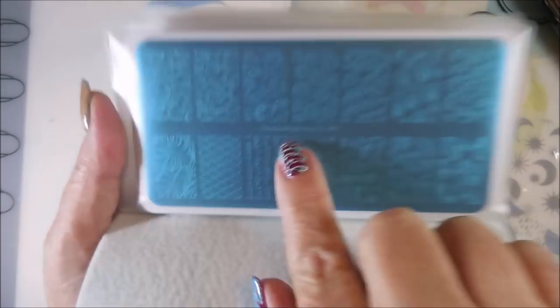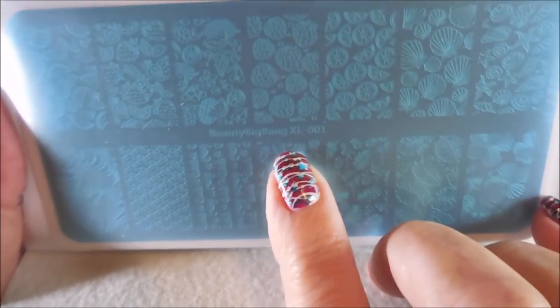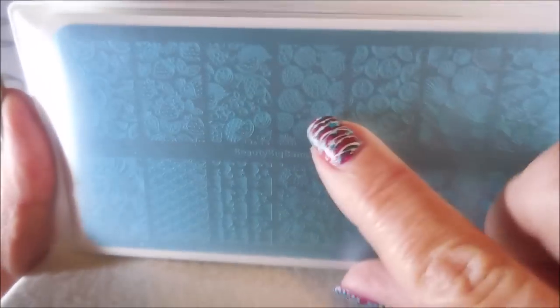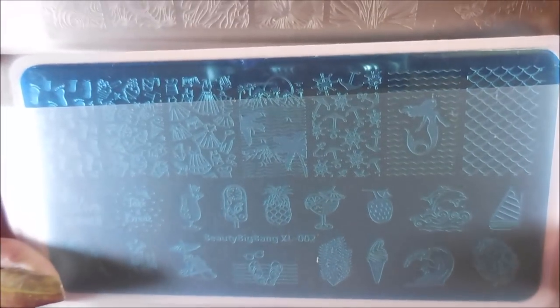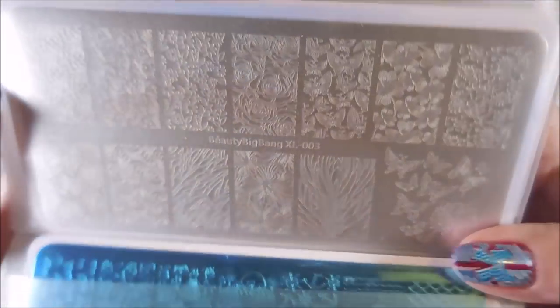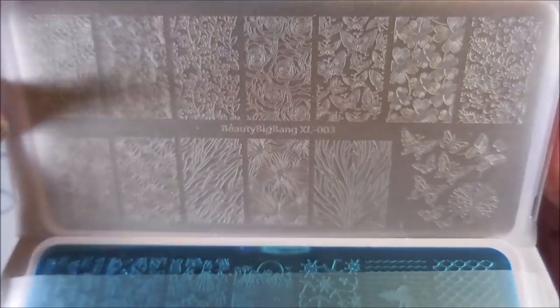This one's beauty big bang XL 001, it's got the raspberries and shells. And then we've got beauty big bang XL 002, that's like mermaid and under the sea. Beauty big bang XL 003, butterflies and flowers.